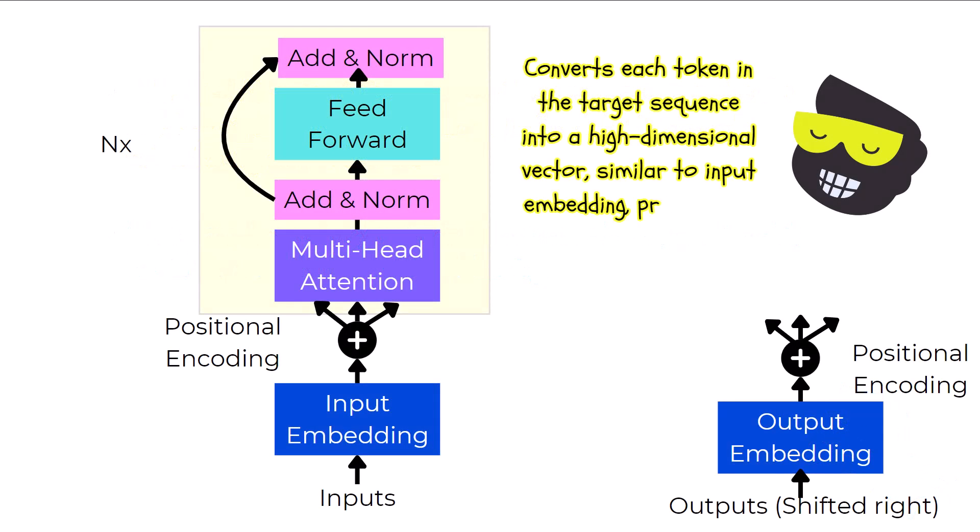In the decoder, we begin with the output embeddings, which works similarly to the input embeddings, but focuses on the target sequence. This step converts each token of the output sequence into a high-dimensional vector, preparing it for further processing. Just like with the input embeddings, we add positional encoding to these vectors to preserve the order of the tokens, which is crucial for generating coherent outputs.